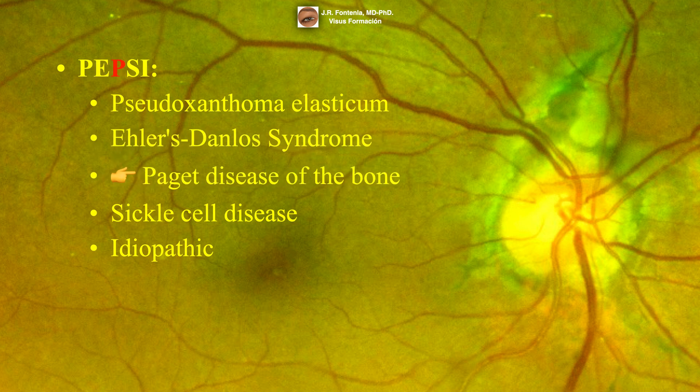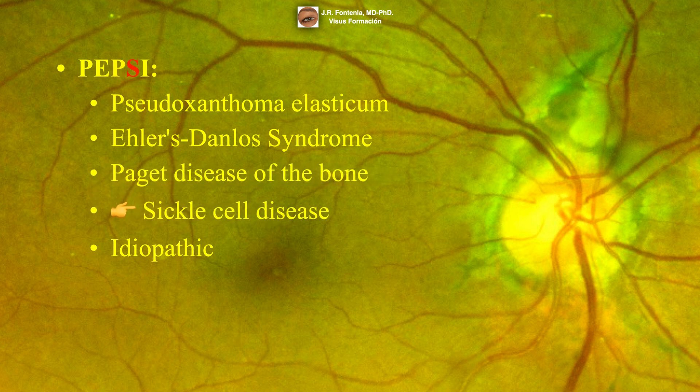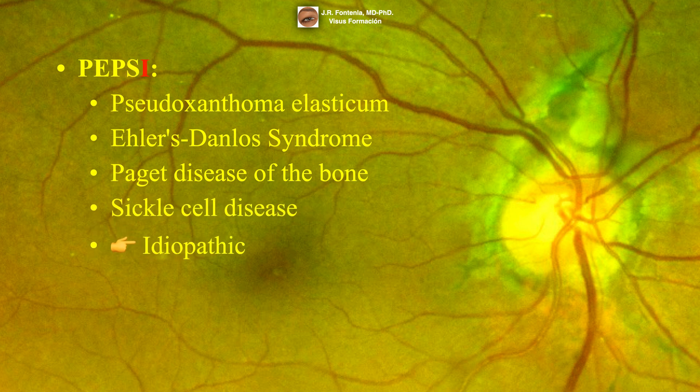Other associations in the PEPSI mnemonic include Paget disease of the bone, sickle cell disease, and idiopathic cases.